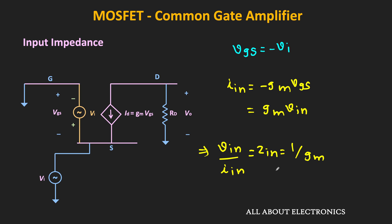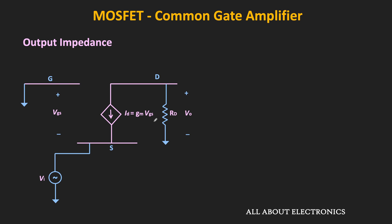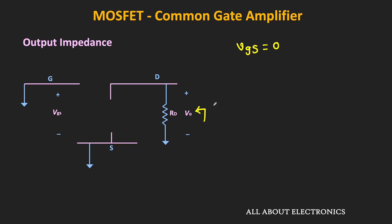Now let us find the output impedance. The output impedance is the Thévenin equivalent impedance seen from the output side with all independent sources set to zero. Setting the input signal to zero means the gate and source terminals are at the same potential, so Vgs = 0. Since Vgs = 0, the drain current Id also becomes zero, meaning the dependent current source acts as an open circuit. Therefore, the output impedance is simply equal to Rd.